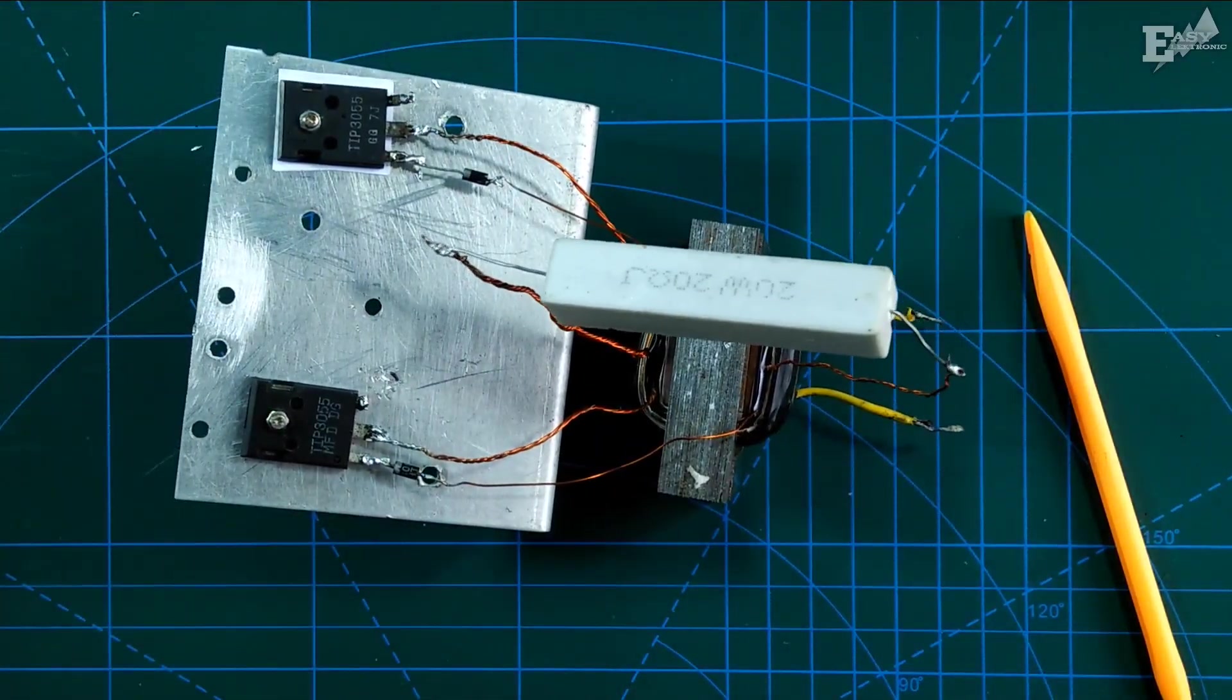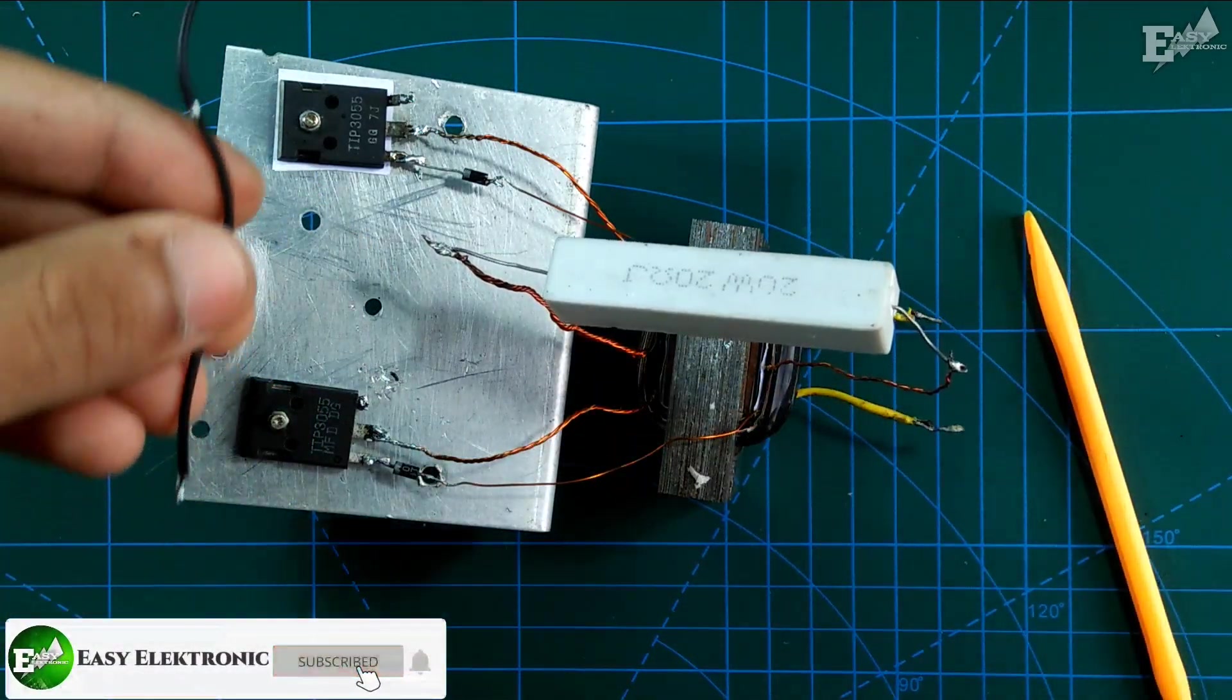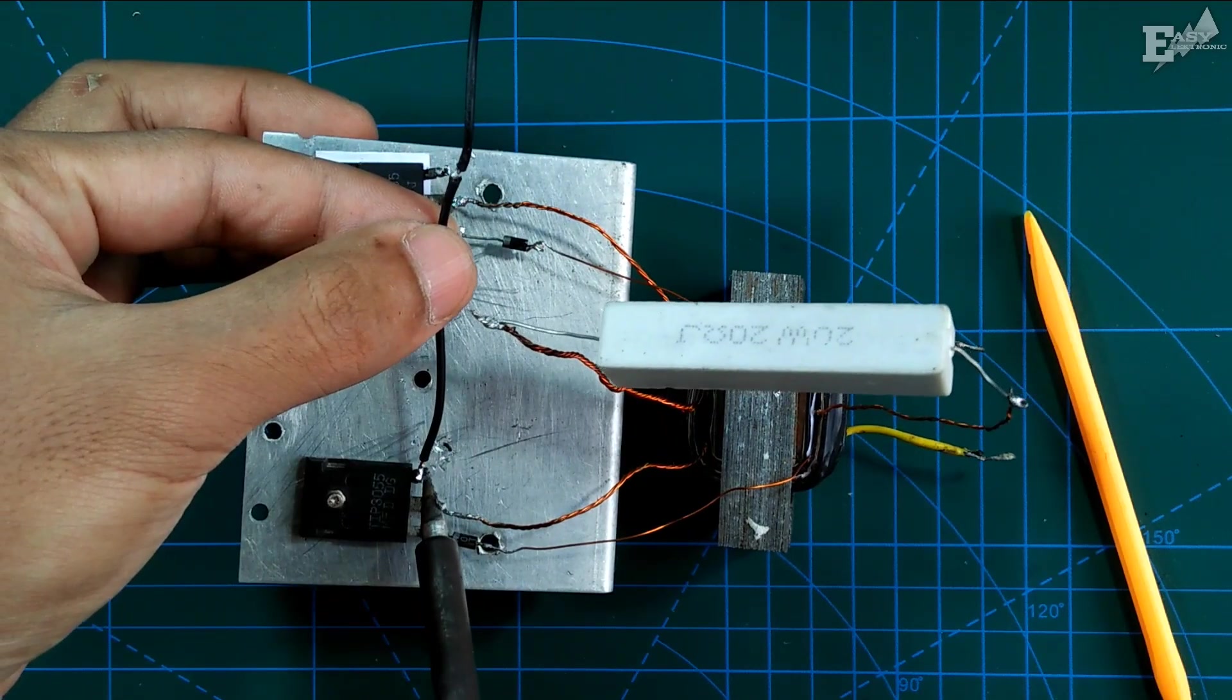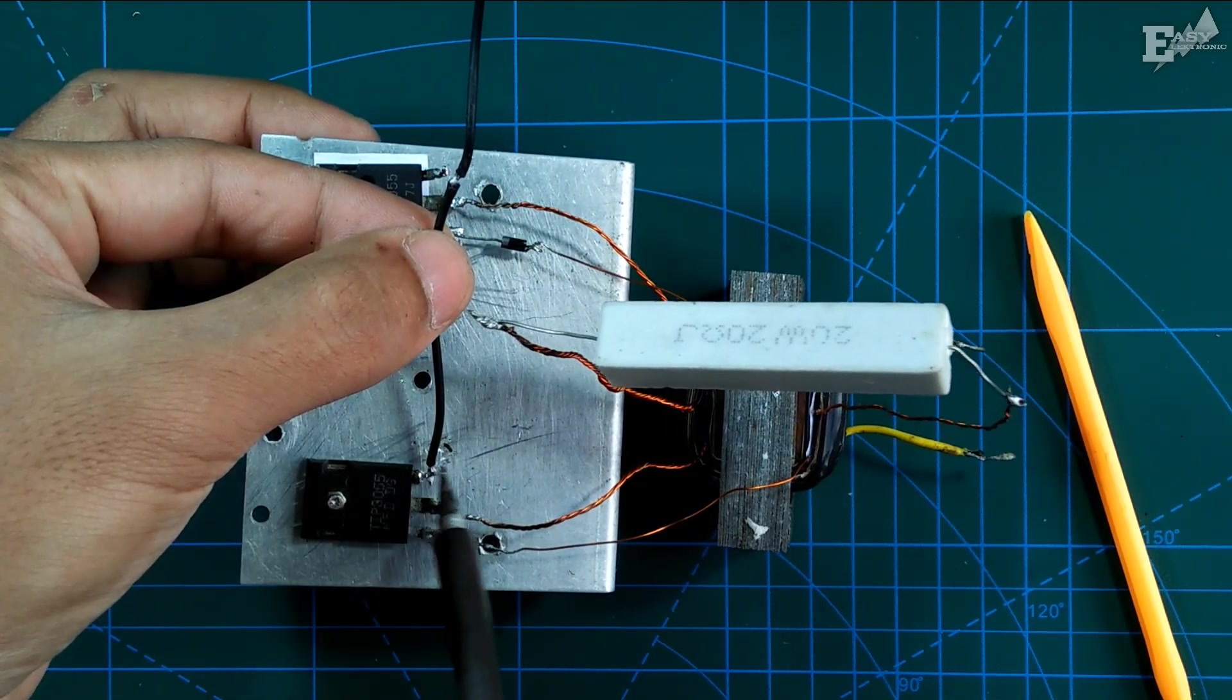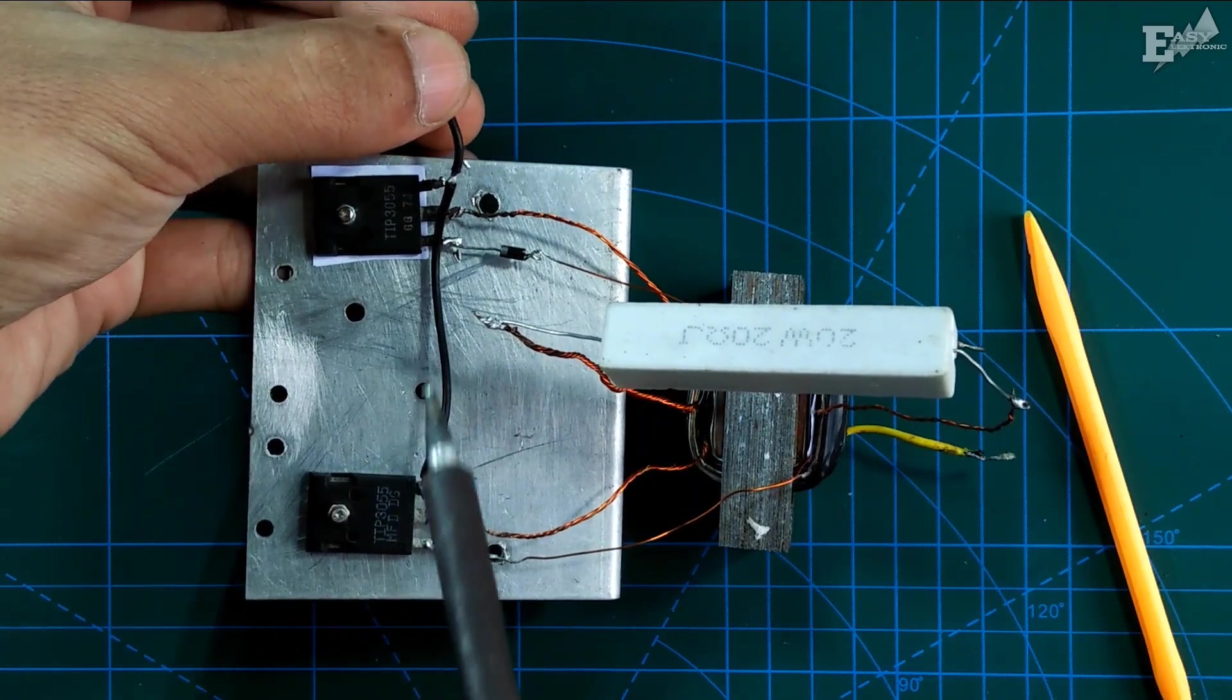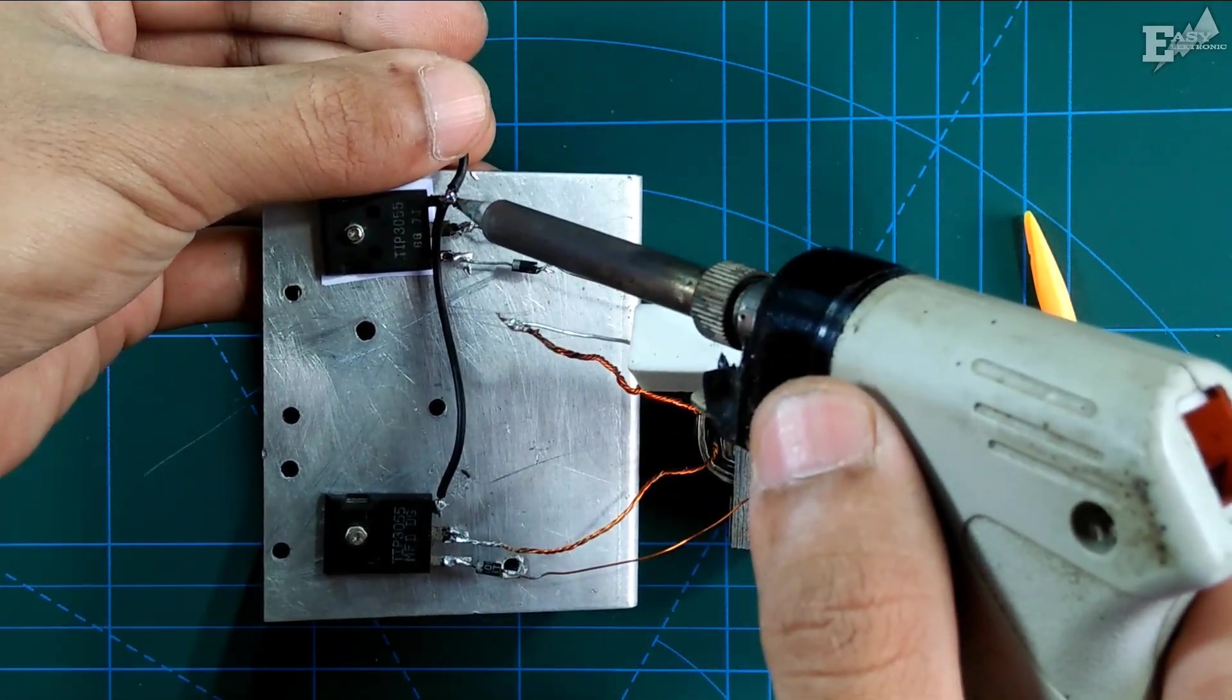Now we just need to install the cable for the negative path. This black cable is for the negative path. Install it on the emitter pin. Just jumper both of them. From the emitter of transistor one and the emitter of transistor two, just jumper them directly. Later it goes into the negative path of the battery.